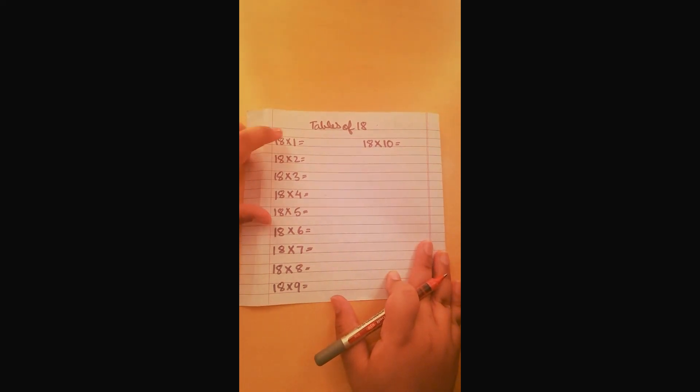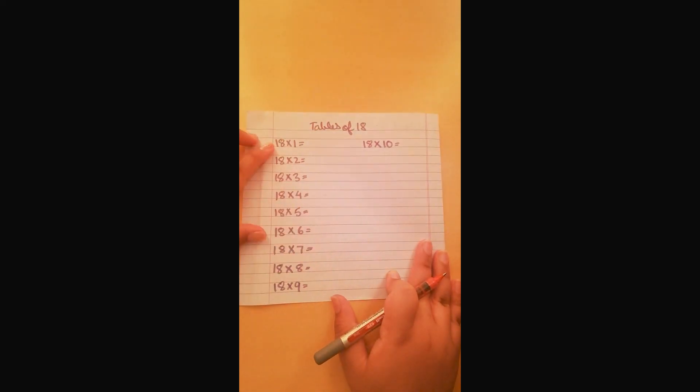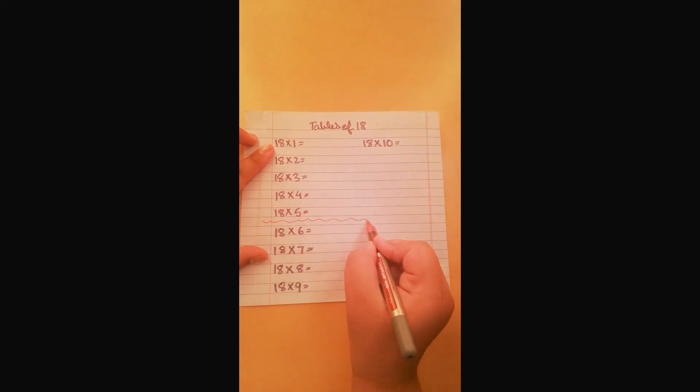One group is from 1 to 5 and the second group is from 6 to 10. So we're just going to make a wiggly line.